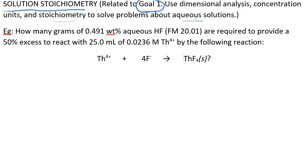I don't have any background material to give you, so I think it's best if we just jump right in and try this example. They want to know how many grams of 0.491 weight percent aqueous hydrofluoric acid solution are required to provide a 50% excess to react with 25 mL of 0.0236 molar thorium-4 by this reaction. Notice that one mole of thorium-4 combines with four moles of fluoride to form a precipitate.